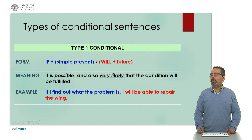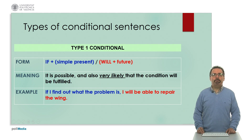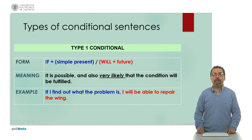In the type one conditional we have another structure: 'if' plus simple present, and in the other part of the sentence a future with 'will'. In this case it is possible and very likely that the condition will be fulfilled. For example: 'If I find out what the problem is, I will be able to repair the wing.' The speaker thinks it is going to happen — it's very probable.